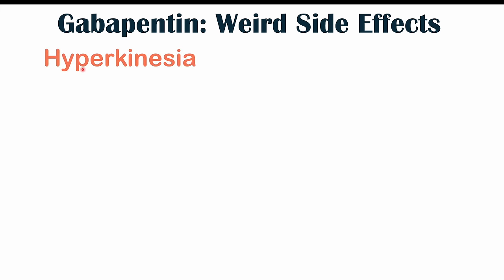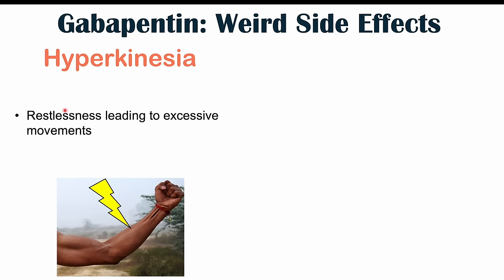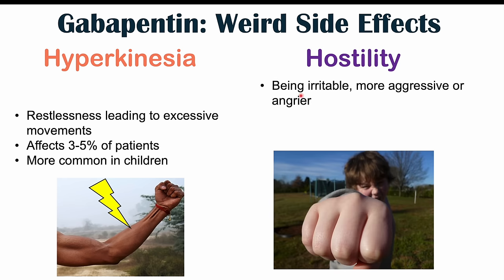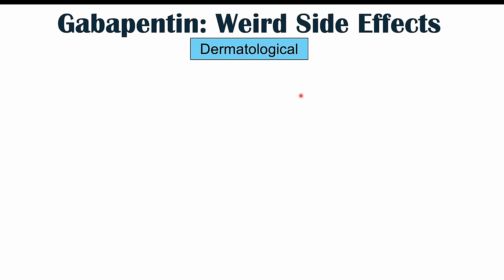Hyperkinesia — a restlessness leading to excessive movements — can also be seen, affecting 3% to 5% of patients and being more common in children. Hostility, including being irritable, more aggressive, or angrier, is another side effect also more common in children. The next system we'll discuss is the dermatological system, relating to the skin.